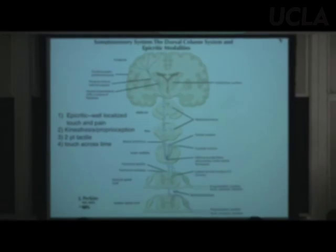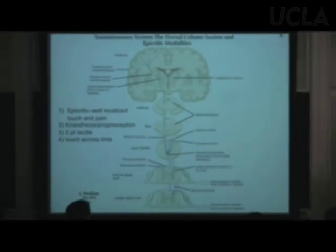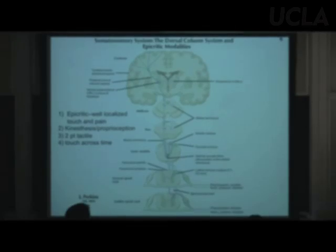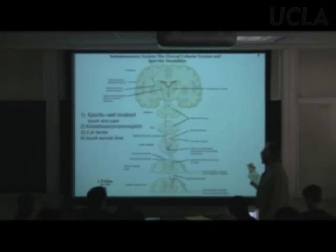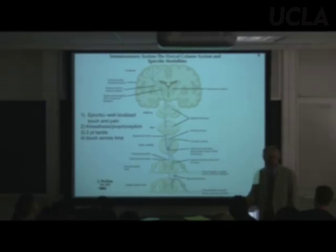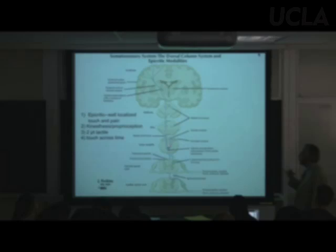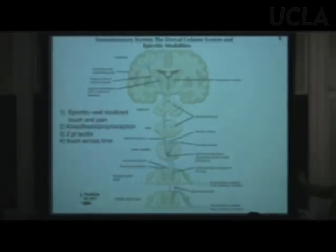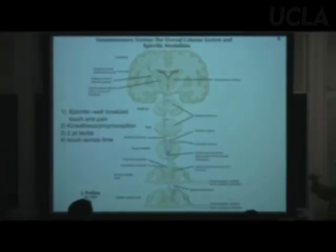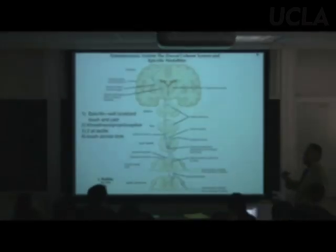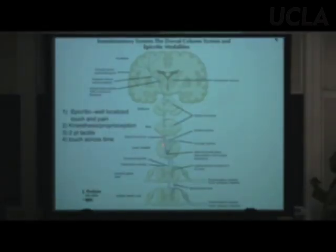Here's where the pathway crosses: cell bodies of the cuneate or gracile nucleus send their axons across the midline. Initially the crossing is diffuse — every axon for itself. Then once across, they make a 90-degree turn upward and form a tight bundle called the medial lemniscus — the medial ribbon.